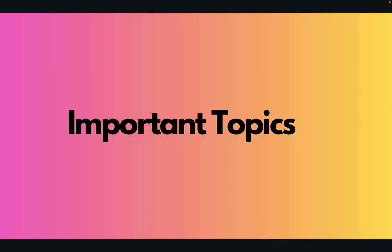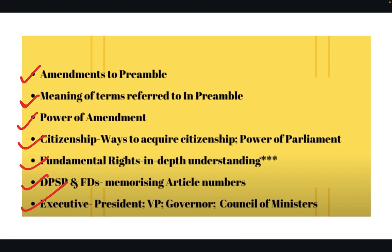Now I will tell you a list of important topics which you absolutely have to cover for the CLAT PG exam. There could be some other areas but the possibility of them being asked is very low, so we've included only the most important ones. First is the Preamble and the amendments that have happened to it. Second is the meaning of the terms included in the Preamble. Third is the power of amendment under Article 368, and all the amendments and judgments that came under it. Then we move to citizenship — it's not a very important chapter overall, but you need to know the ways in which a person can acquire citizenship in India and the power of Parliament under Article 11.